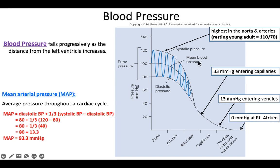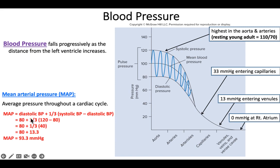The center line on that graph is mean arterial pressure, or MAP — the average pressure throughout one cardiac cycle. The formula is: MAP = diastolic pressure + (1/3 × pulse pressure), where pulse pressure is systolic minus diastolic. For example, with a blood pressure of 120 over 80: pulse pressure = 120 − 80 = 40; one-third of 40 = 13.3; MAP = 80 + 13.3 = 93.3 mmHg.